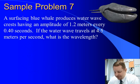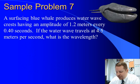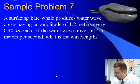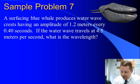Let's try one more. A surfacing blue whale produces water wave crests having an amplitude of 1.2 meters every 0.4 seconds. If the water wave travels at 4.5 meters per second, what is the wavelength? Well, in this case, we know velocity of the wave. We know the period of the wave.